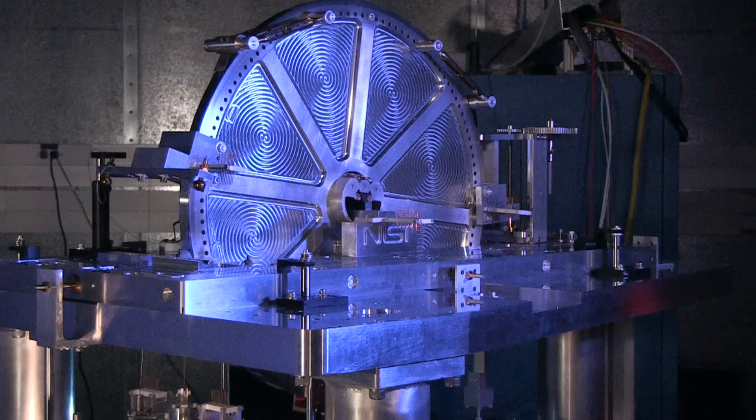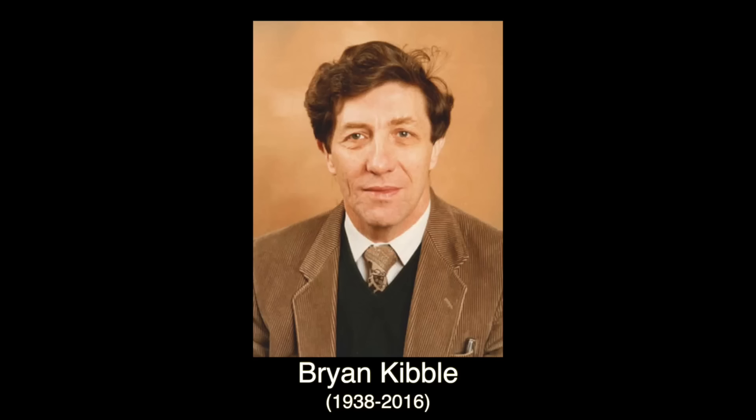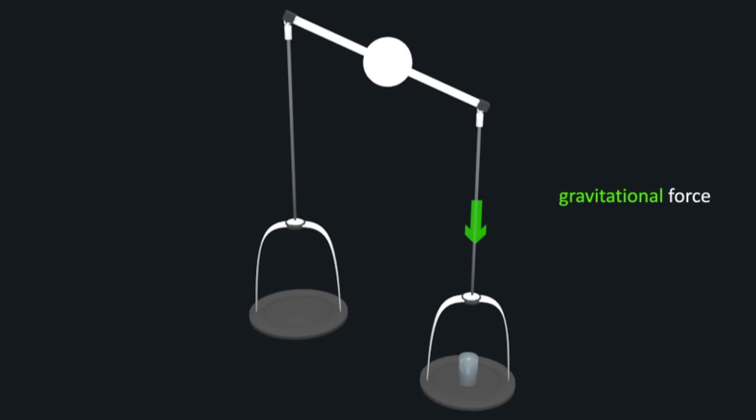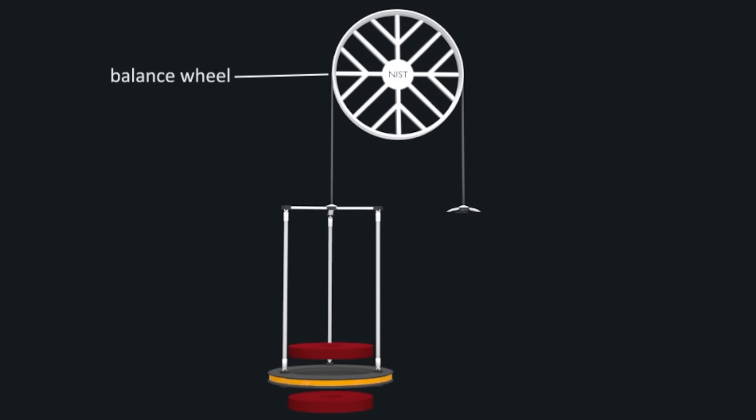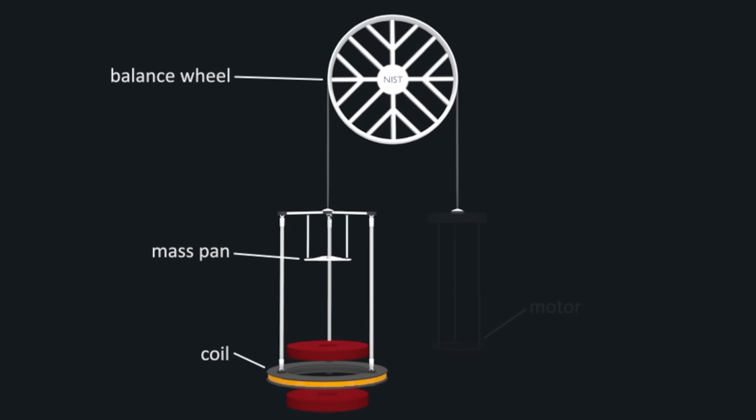Now, since I've already discussed the Avogadro approach in a previous video, here I want to focus on the watt balance. It's actually now called a Kibble balance in honor of its inventor, Brian Kibble, who passed away in 2016. Traditional balances work by equating the gravitational forces on objects in two pans. The Kibble balance looks kind of similar, but all of the balancing happens on the left-hand side, where a mass pan is attached to a coil of wire in a magnetic field. On the right-hand side is a motor.